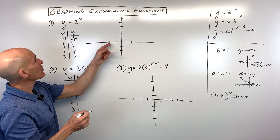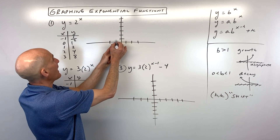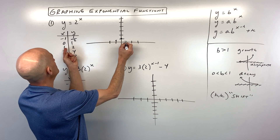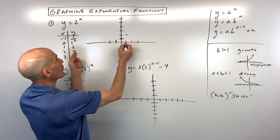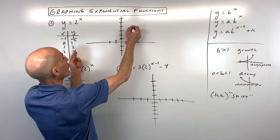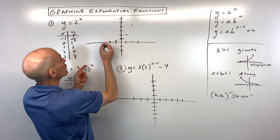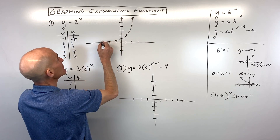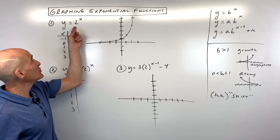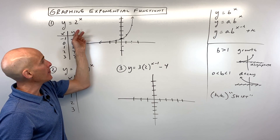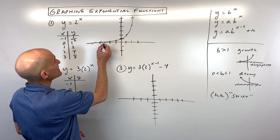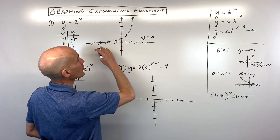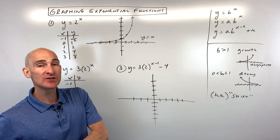Plotting those coordinates: left one up one-half, then zero-one, one-two, two-four, three-eight — going off the graph. Notice how the graph goes up faster and faster as we go to the right; that's exponential growth, and we knew that because the base was greater than one. The graph gets closer to the x-axis, which is the horizontal asymptote, the line y equals zero.